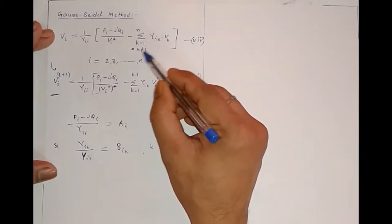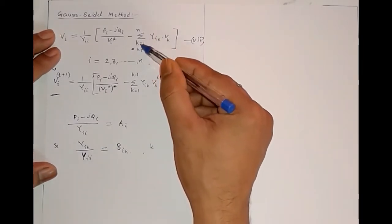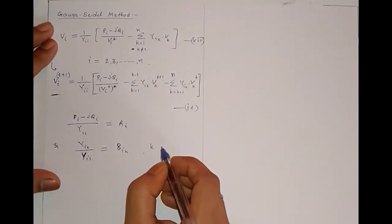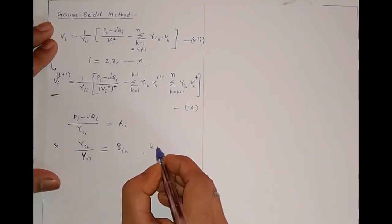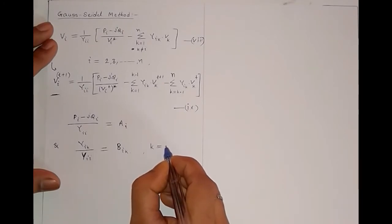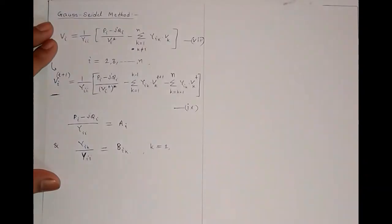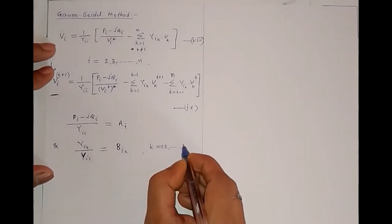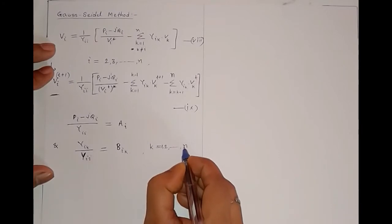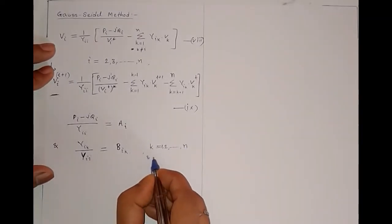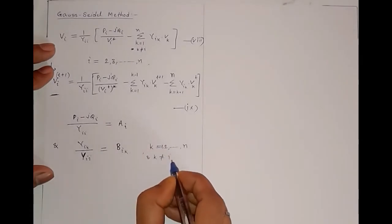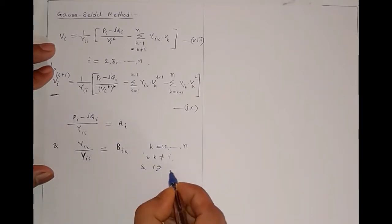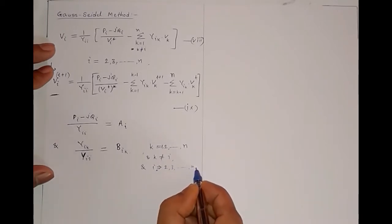Similarly, the term Yik divided by Yii is also a fixed known parameter that will not change in different iterations. Let us assume Yik divided by Yii is denoted as Bik, where k varies from 1 to N and k is not equal to i.